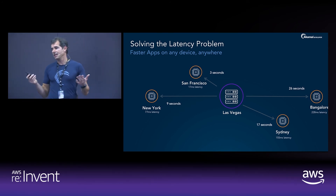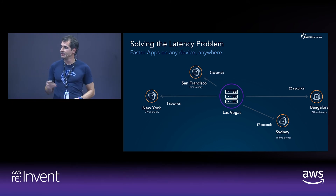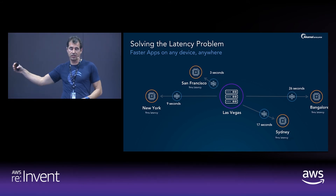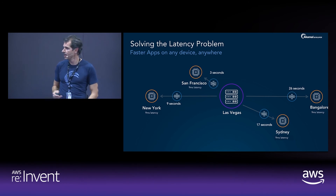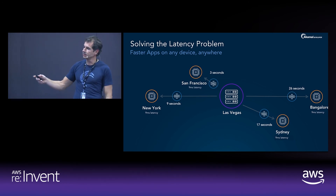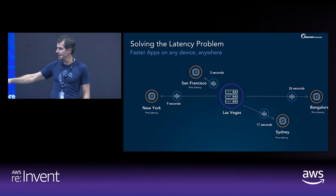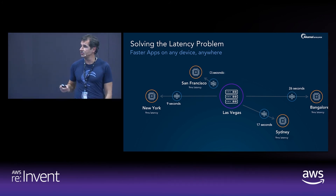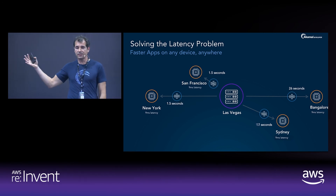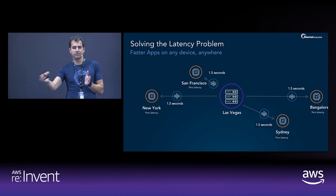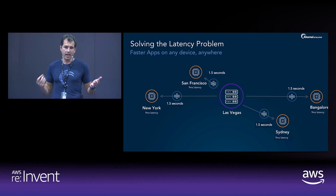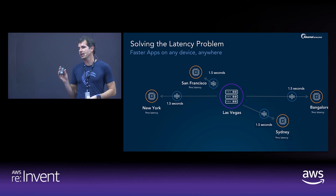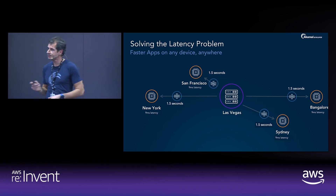The solution is simple: just put the server very close to the end user so you don't have the latency in between. Once you do that, the latency will be around 9 milliseconds everywhere, which translates to about 1.5 seconds load time from San Francisco, New York, basically everywhere. You just remove the round trips through the internet.